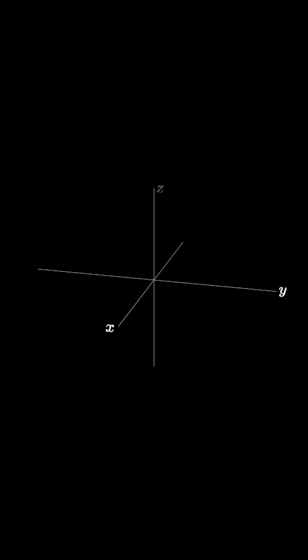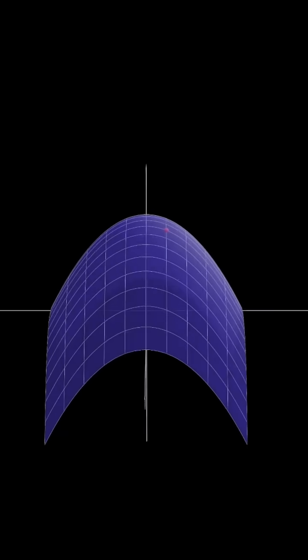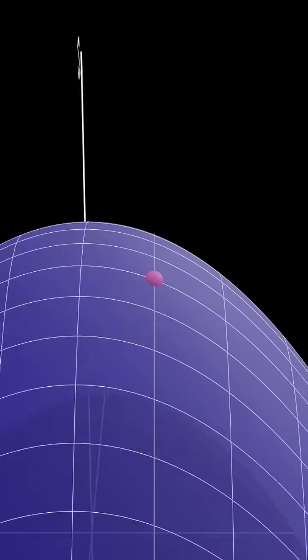Imagine you have a surface in three-dimensional space and you want to understand what the surface looks like at a given point. If you zoom in far enough, the surface looks like a flat space.